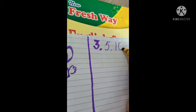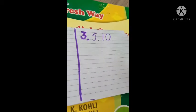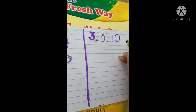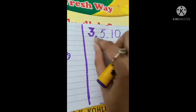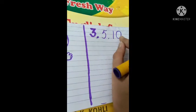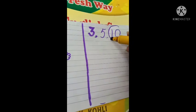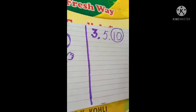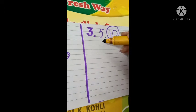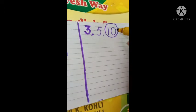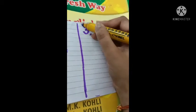Kya mujhe bata sakti hai? Is mire sabse big number koon sa hai? Jo number sabse baad mein aata hai, woh sabse big hota hai. Three, five, ten — ten sabse baad mein aata hai, woh number big number hai. Toh hum kya karenge? Big number koo circle karenge or smallest number koo cross karenge. Sabse smallest number means jyo sabse peahle aata hai. Three cross.